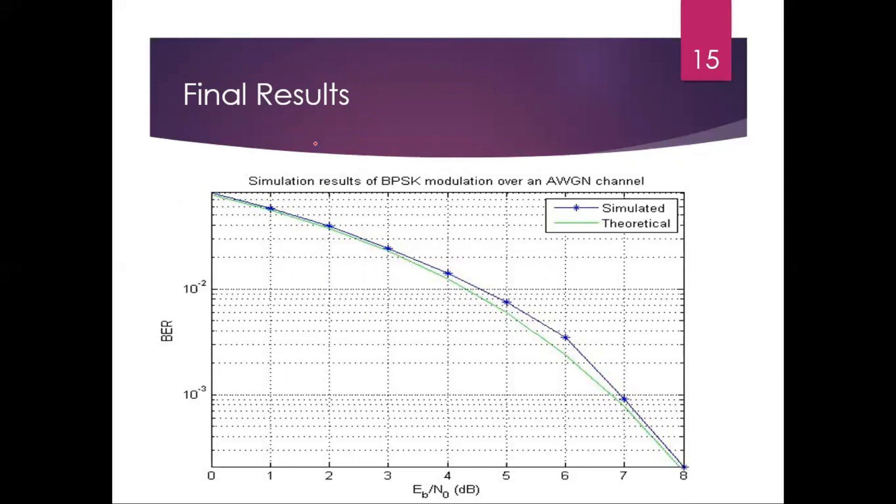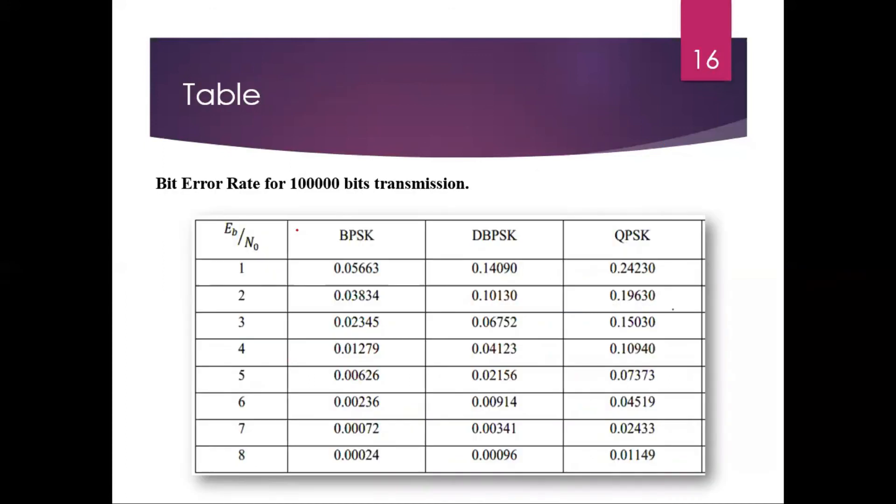Here is the complete table of bit error rate for 1 lakh bits transmission using DPSK, DBSK and QPSK. This is actually the theoretical table of the previous graph we can say DPSK, DPSK and QPSK.